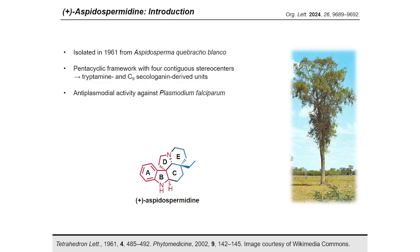Aspidospermine and other structurally related Aspidosperma alkaloids were shown to exhibit anti-plasmodial activity against two strains of Plasmodium falciparum, which is the parasite responsible for the most severe forms of malaria. However, it is the construction of the pentacyclic framework that has attracted significant synthetic attention. Consequently, aspidospermine has become a popular target for the development of novel synthetic methodologies.